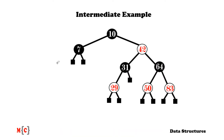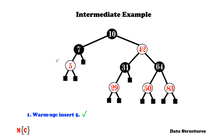To master the subject, let's do an intermediate example — I've prepared an exercise for each case. Starting with a warm-up: we insert the number 5 into the following tree. If you'd like to do this on your own, please pause the video. The answer is simple: we insert 5 to the left of 7, replace the external node, and make 5 red. We end up with a valid red-black tree where we haven't introduced a double red because 7 is black.